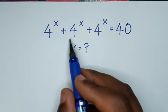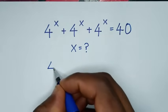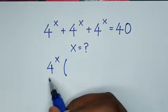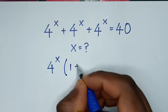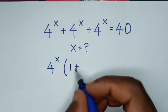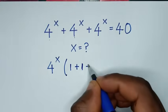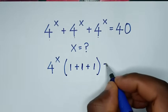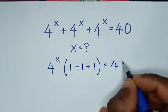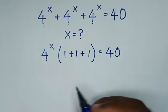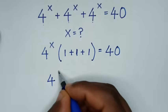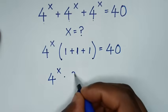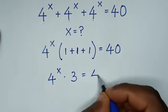From here, 4^x is common, so we take 4^x outside the bracket. Then 4^x divided by 4^x is 1, plus 1, plus 1 — giving us 4^x times (1 + 1 + 1), which is 3, equals 40.